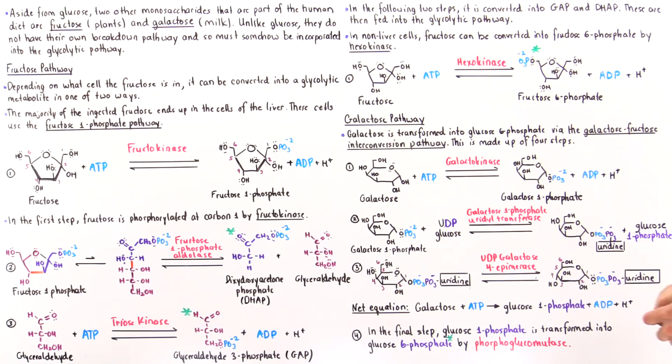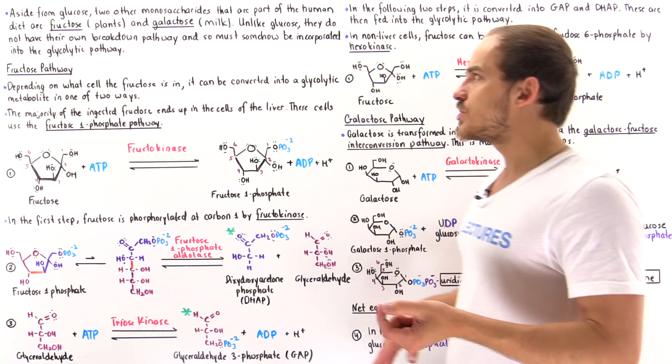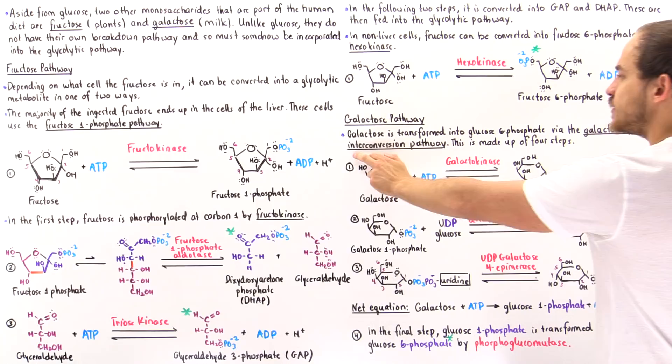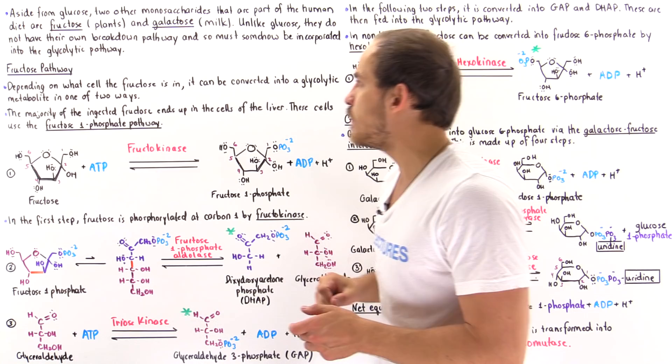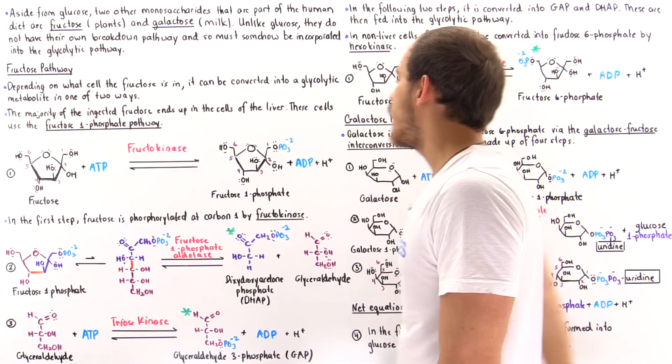Now let's move on to galactose. Unlike fructose, there is only one pathway followed by galactose. Once galactose makes its way into the cells of our body, galactose is transformed into glucose 6-phosphate via the galactose-fructose interconversion pathway, which is made up of four steps. The green asterisk marks molecules that are part of the glycolytic pathway — once we form these molecules, they can be incorporated directly into glycolysis to form pyruvate and ATP molecules.